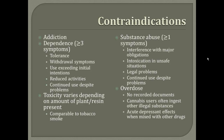Cannabis sativa addiction is really hard to define because some people say it's a physical process, while some people say it's a psychological process. Dependence can be defined as three or more of the following symptoms: tolerance, withdrawal symptoms, use exceeding initial intentions, reduced activities, or continued use despite problems. Substance abuse can be defined as one or more of the following symptoms: interference with major obligations, intoxication in unsafe situations, legal problems, or continued use despite problems.